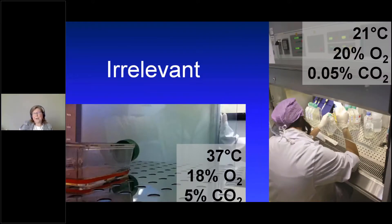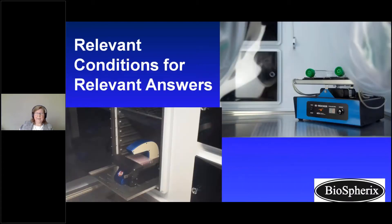You can't figure out how to save the rainforest by plunking a monkey down in the middle of Manhattan — it's an irrelevant environment. You have to have the proper conditions for your cells if you're going to have anything that's reproducible or translatable. While we've collaborated with PHI and really enjoy combining our technologies, we've just started a collaboration with SBI with their ID Rocker, and we're very much looking forward to doing projects combining our technologies — putting the relevant tools in the relevant environment for relevant answers. Back to you, Lisa.